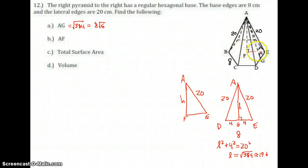A-F-E is the right triangle. I know A-E is already 20. This A-F, I don't know. I'm going to call that H. F to E, this is the radius of a regular hexagon. Radius of the regular hexagon is the same as the side. So that's also 8.